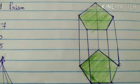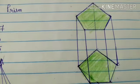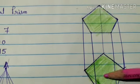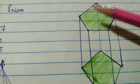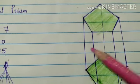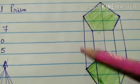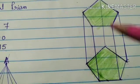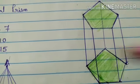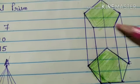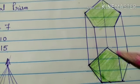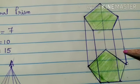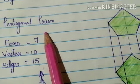Now you see this is a pentagonal prism. So how many faces are there? If you will see up and down it is 2 faces, and then from there it is 3, here it is 4, this one it is 5, this one it is 6, and from there it is 7. So there are 7 faces in a pentagonal prism.